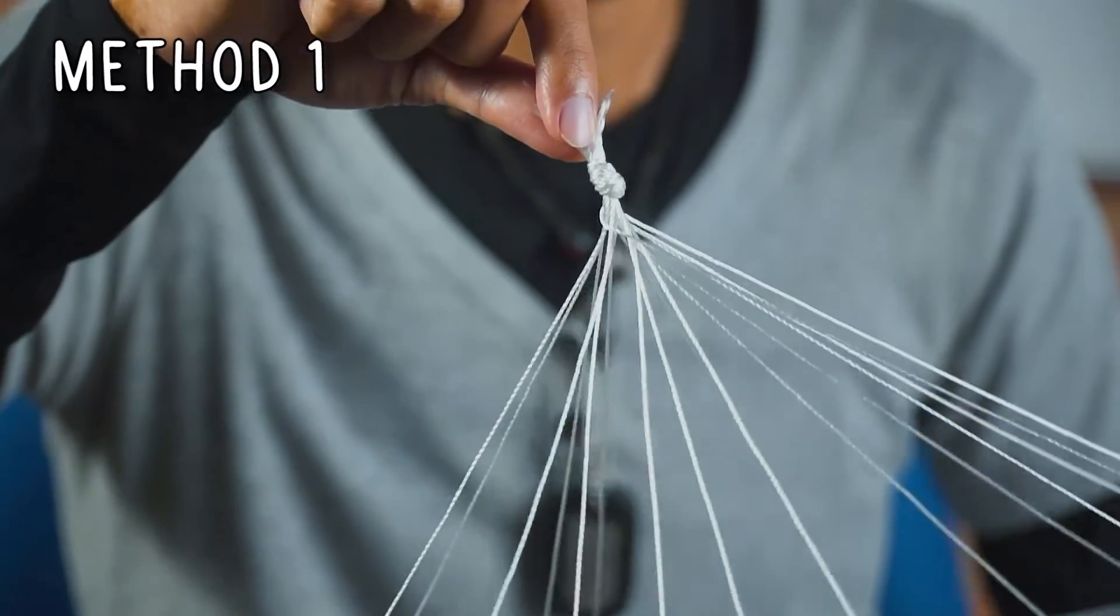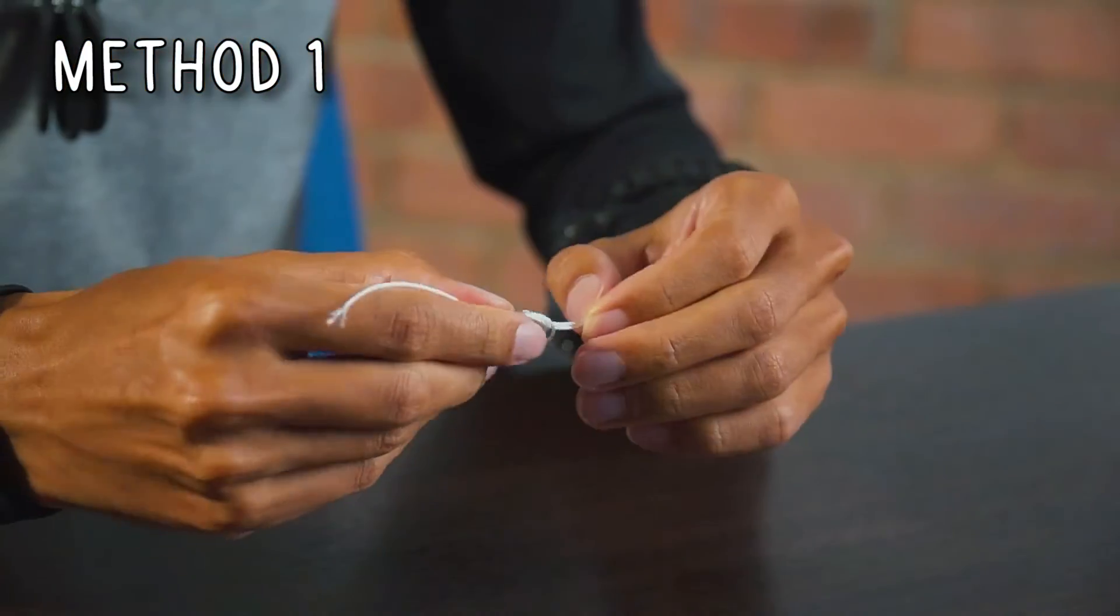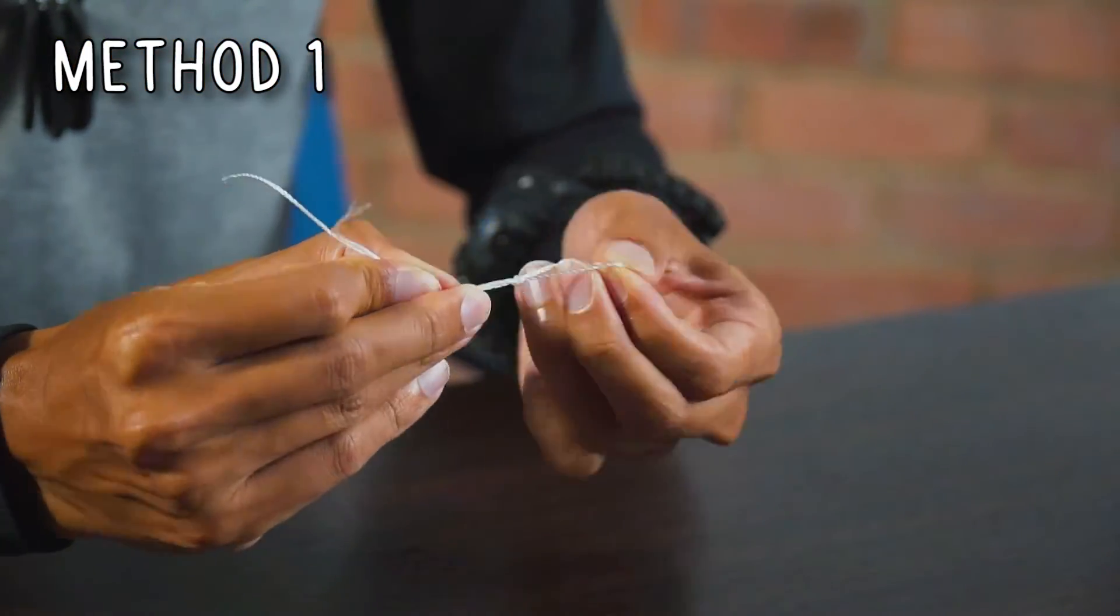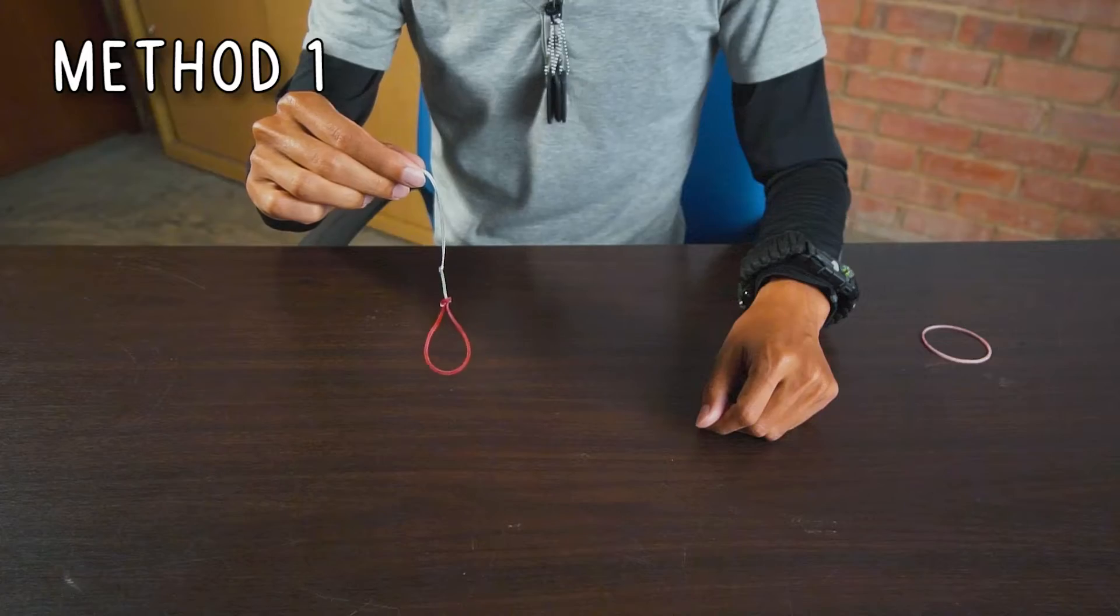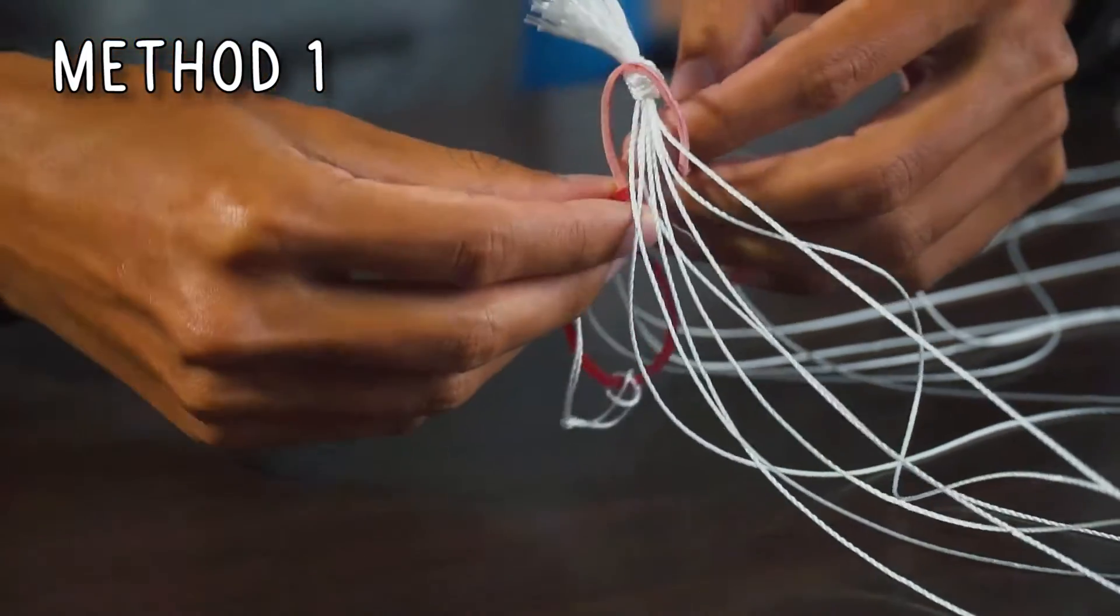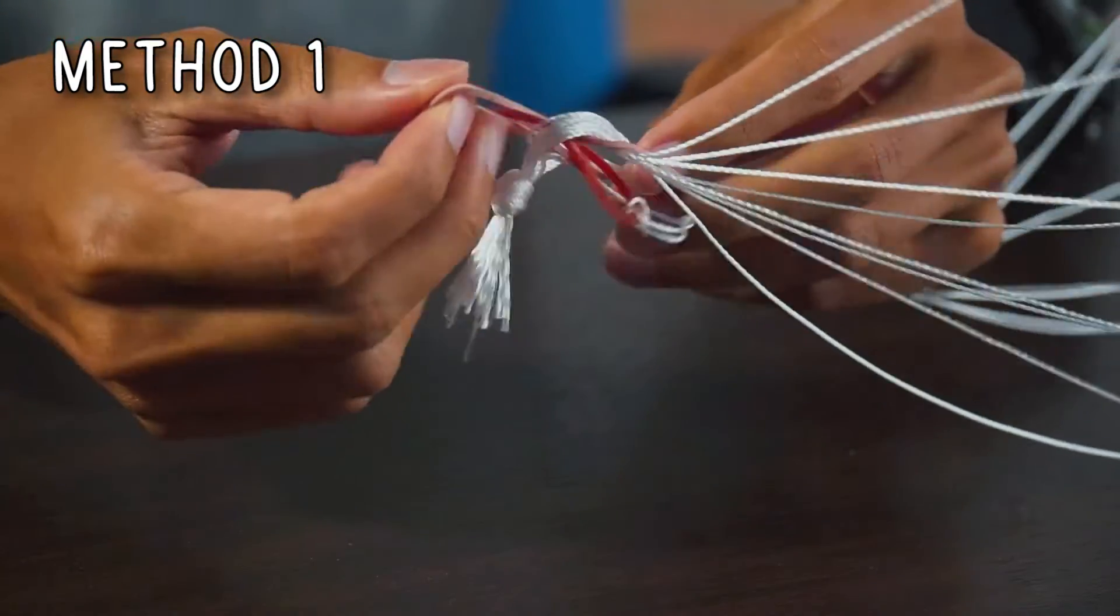Then, cut a 30 cm long string and tie a knot in the middle. Take one rubber band and tie to the ends of the strings. Then, tie the other end of the rubber band to the knot of the 30 cm long string.